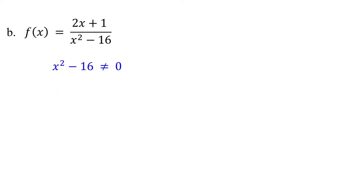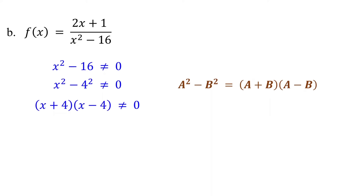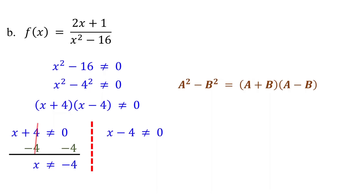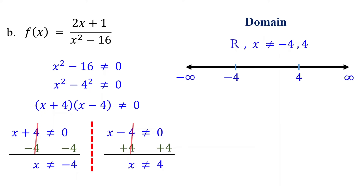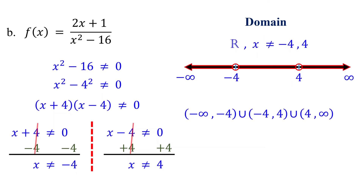For this function to be defined, x squared minus 16 must not equal zero. To solve this inequality, first factor the quadratic expression using the difference of two squares formula. Then set each factor not equal to zero. Solving, we find that x cannot equal negative 4 or 4. Therefore, the domain is all real numbers except negative 4 and 4. Mark open circles at both negative 4 and 4, shade the line to the left of negative 4, between negative 4 and 4, and to the right of 4. The domain in interval notation is negative infinity to negative 4 union negative 4 to 4 union 4 to positive infinity.